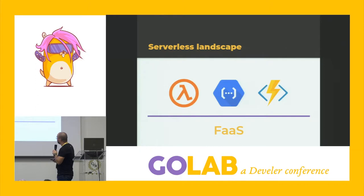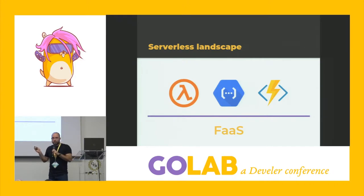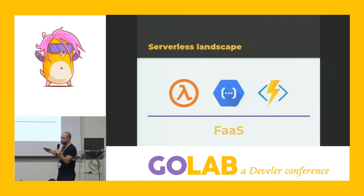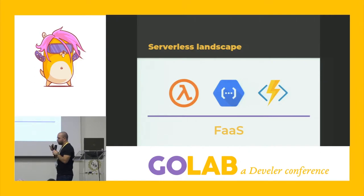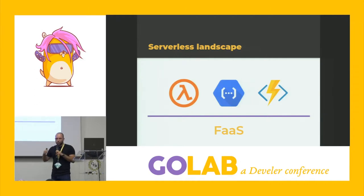We have a bunch of interesting products out there, like AWS Lambda, Google Cloud Functions, and Azure Functions. These are really nice products — you can achieve a lot of awesome things with them. We mostly refer to them as functions-as-a-service platforms. But we also know that in the past, and actually it's still there, we had platform as a service. So what's the difference between a platform as a service and a function as a service?